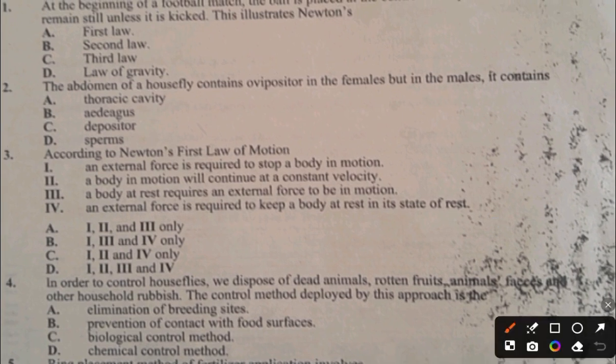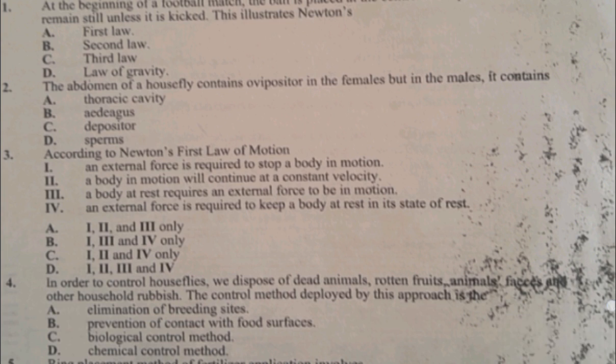Question 4. In order to control houseflies, we dispose of dead animals, rotten fruits, animal faeces, and other household rubbish. This control method is A. Elimination of breeding sites, B. Prevention of contact with food surfaces, C. Biological control method, D. Chemical control method. The answer to question 4 is A, elimination of breeding sites.